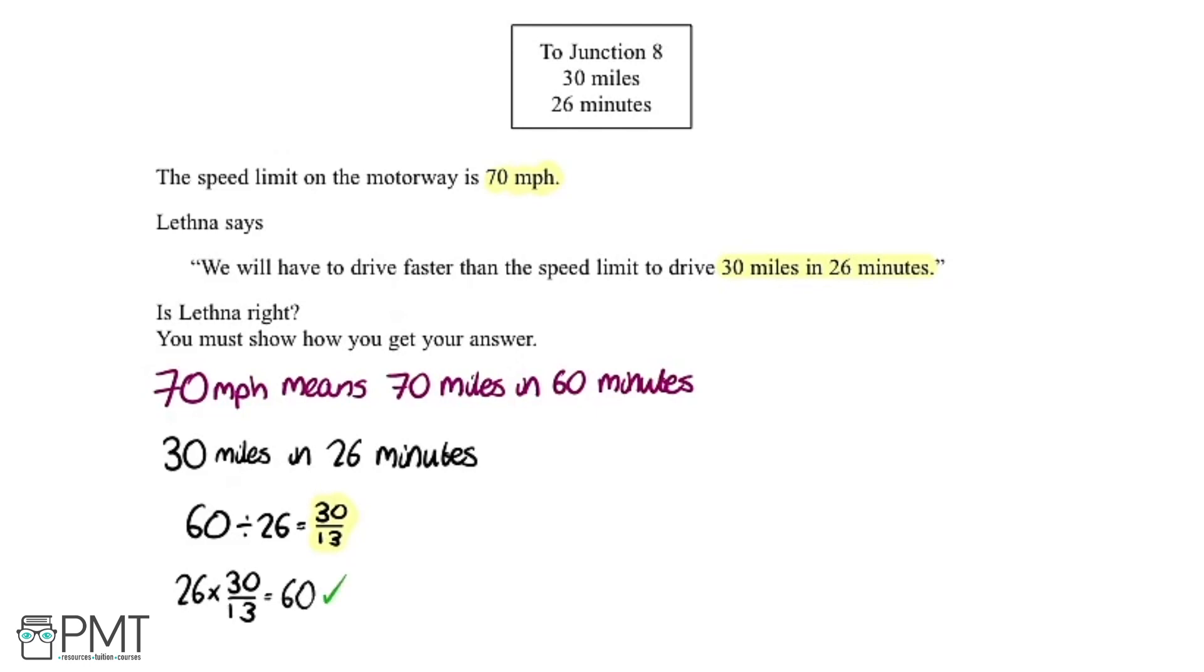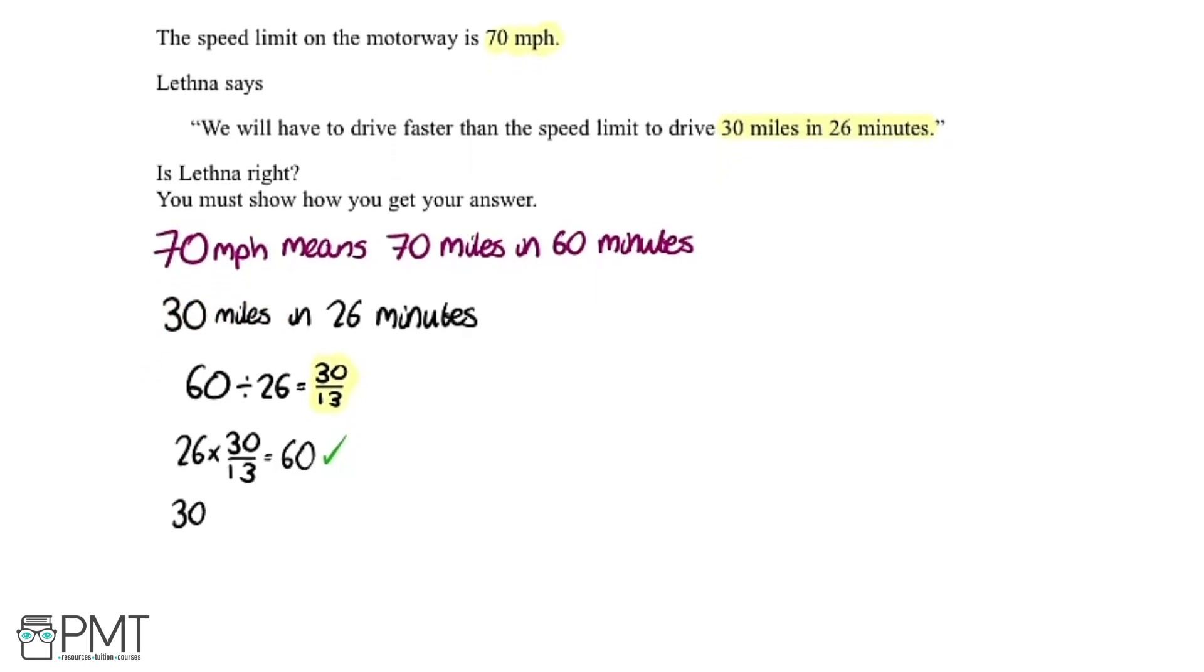We know we've worked that out right and now we can also multiply our miles part by our multiplier we worked out. It's going to have 30 multiplied by our multiplier which is 30 over 13 and that gives us 900 over 13 and we're going to write that as a decimal so that's going to give us 69.23 rounding that to two decimal places.